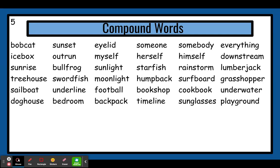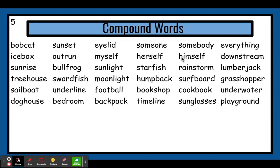Next compound word — let's see if we can figure out what this is. We have two words put together to make a bigger word. First part is star, second part is fish. We know what a star is, and we know what a fish is. We put them together: starfish. That is a water creature that looks like a star. Next we have rain and storm. Put them together: rainstorm. You know what rain is, and you know what a storm is — you put them together, you have a storm with a lot of rain.